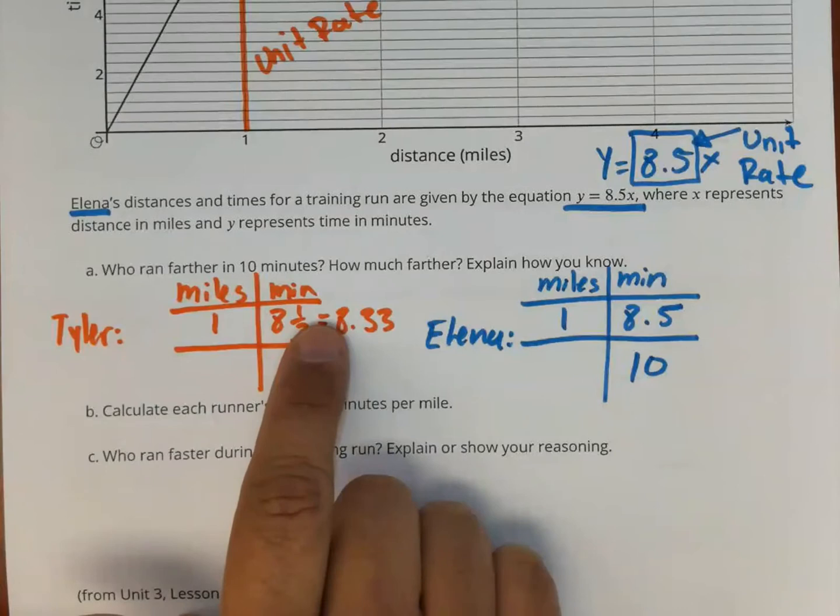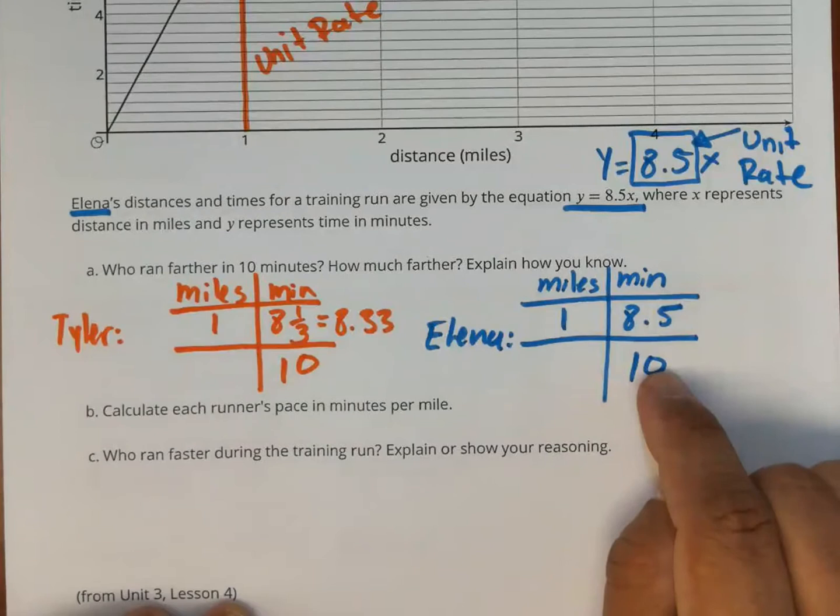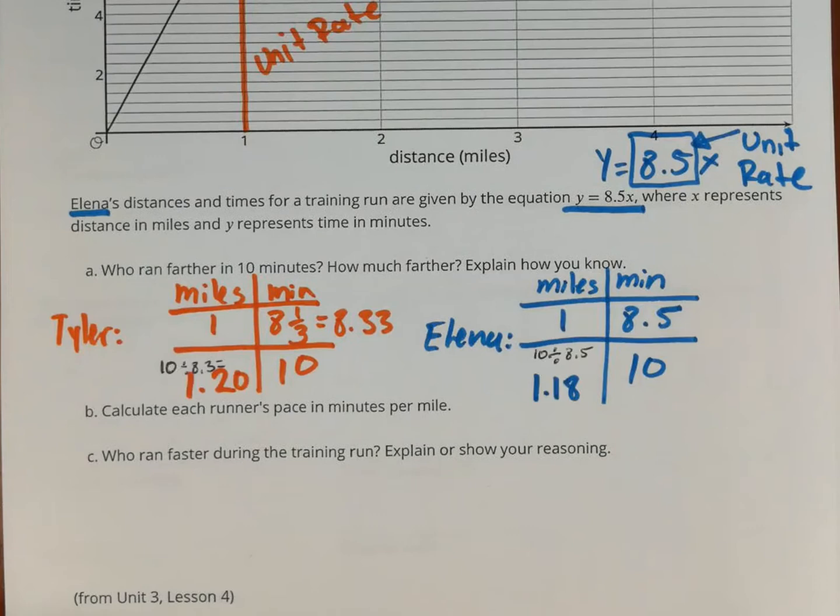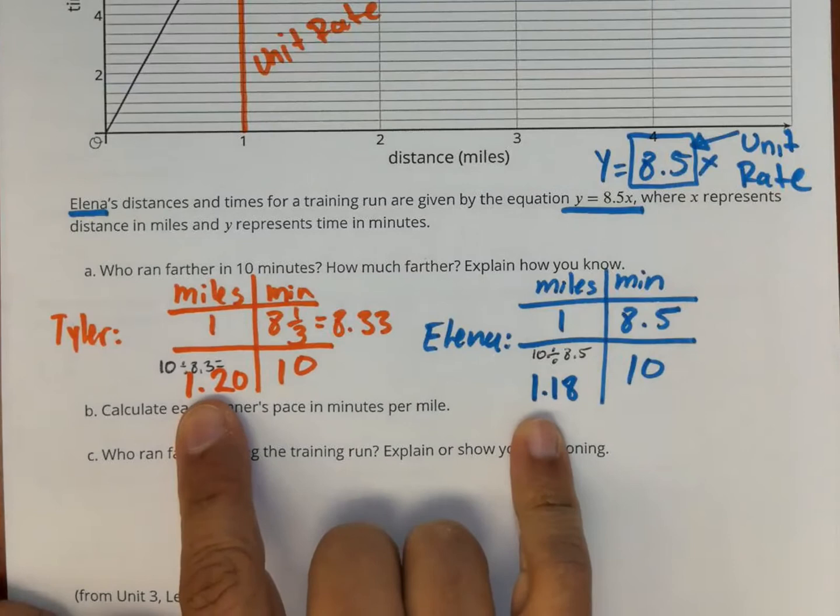And I'm going to do the same thing here for Elena. I'm going to do 10 divided by eight and a half. So I did the division right here, 10 divided by 8.3 or eight and a third. And then right here, 10 divided by eight and a half. And I get how far each student runs for 10 minutes right here. Now you can see right away who runs farther. Tyler runs further in 10 minutes.